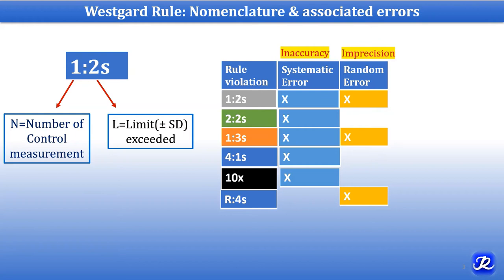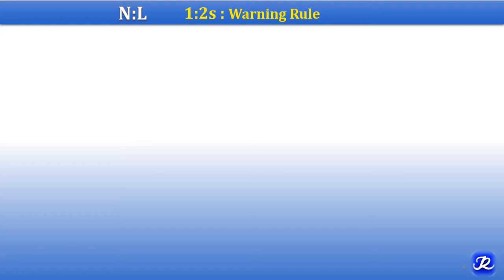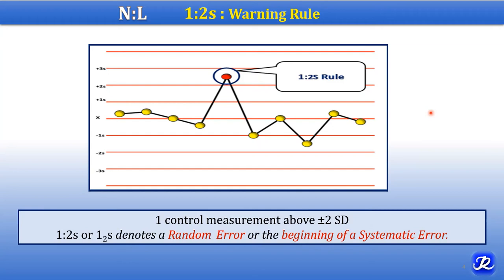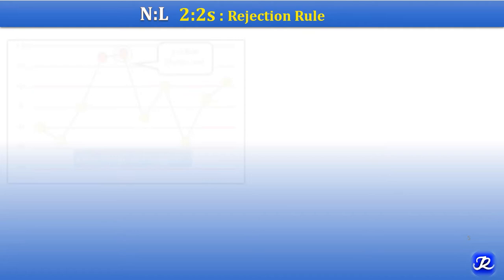Systematic error is representative of inaccuracy, and random error represents imprecision. Now let's understand each rule. In the 1-2S rule, this Levy-Jennings chart is created with mean ±1, 2, and 3 standard deviations. In the fifth run, you can see that this control measurement is above 2 standard deviations — it is violating the 1-2S rule. One control measurement above ±2 standard deviations is the 1-2S rule, which denotes random error or the beginning of systematic error.